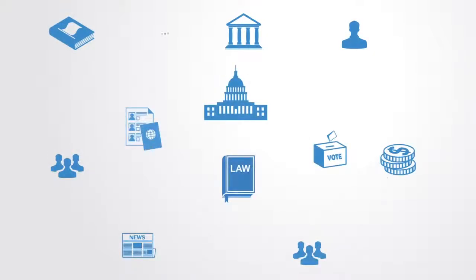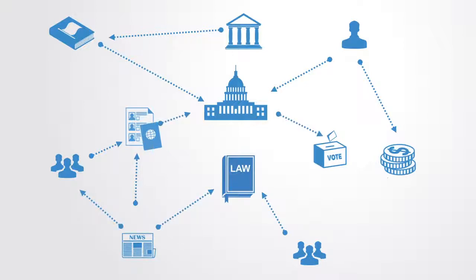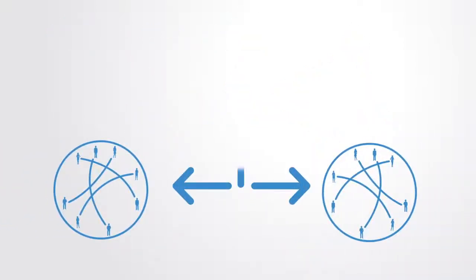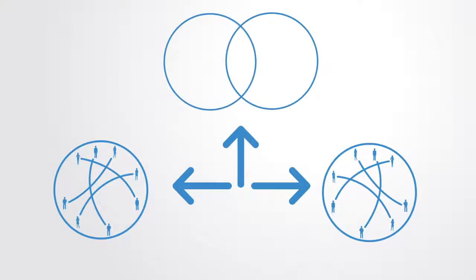Socio-political dynamics refers to the major components, relations, and patterns within a political system that defines its overall workings and process of development. A political system is a set of institutional structures through which members make collective decisions. Political dynamics refers to the patterns of interrelationships between those elements that define how the system evolves over time.